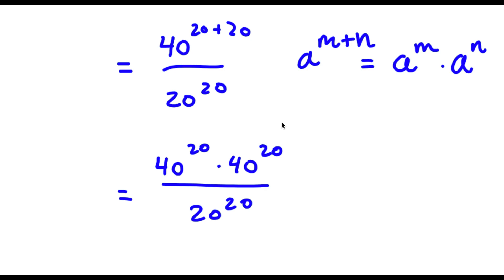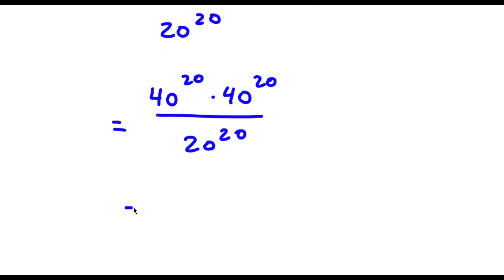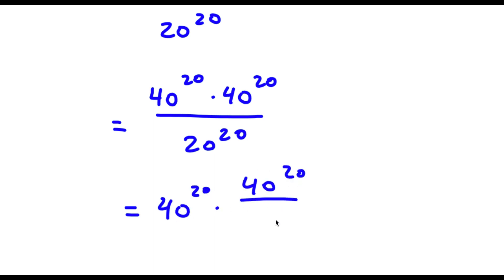So now I can rewrite this as 40 to the power of 20 times 40 to the power of 20 over 20 to the power of 20. I simply took out the 40 to the power of 20, so it's just like this.